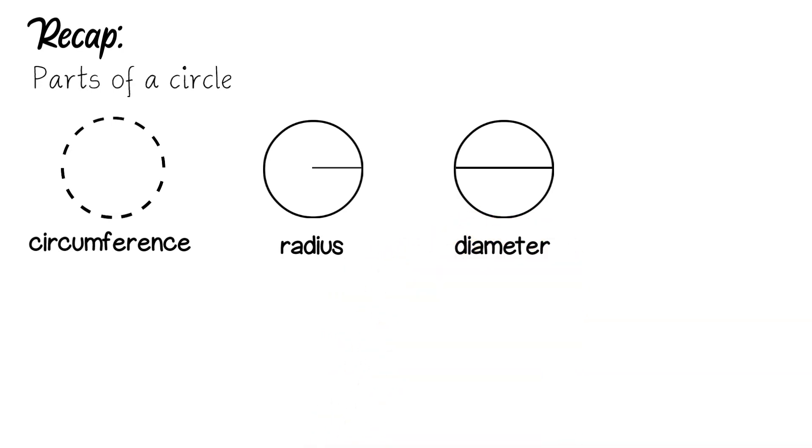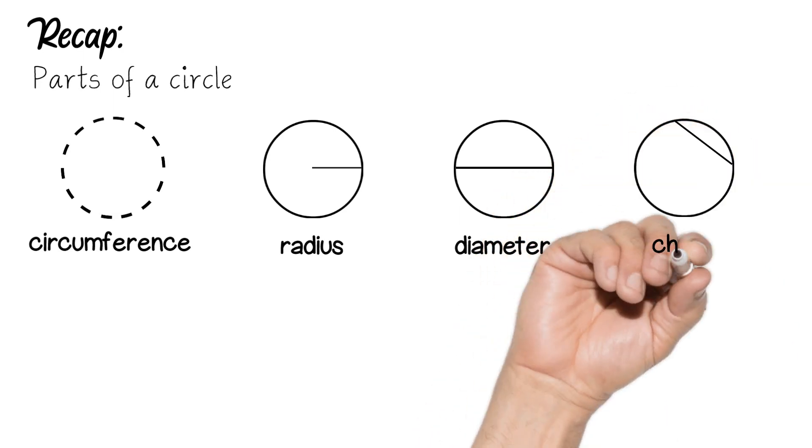The fourth diagram is showing a line that is going through one part of the circumference to the other and that is called a chord and that does not go through the centre.